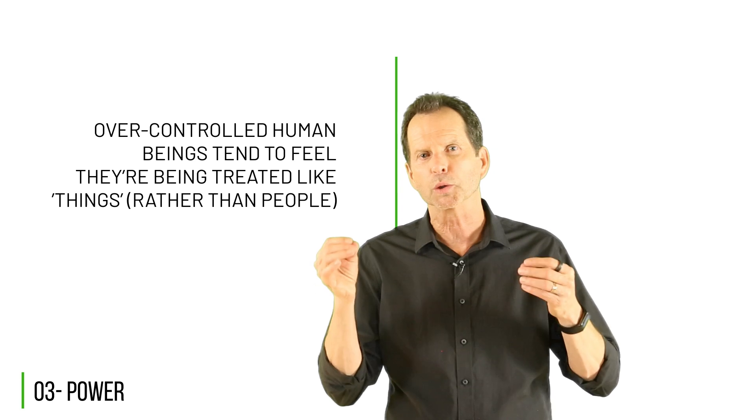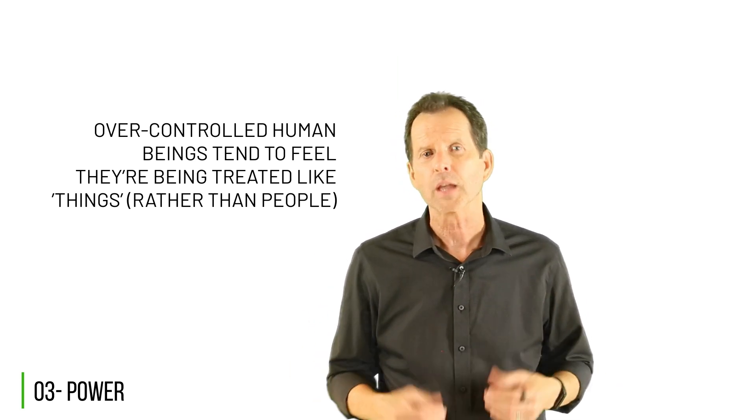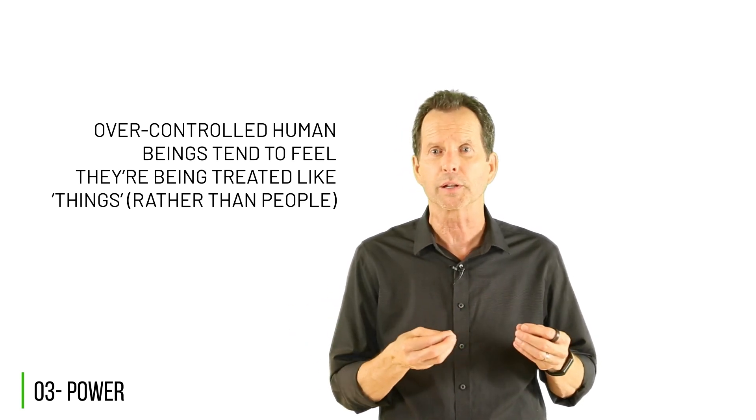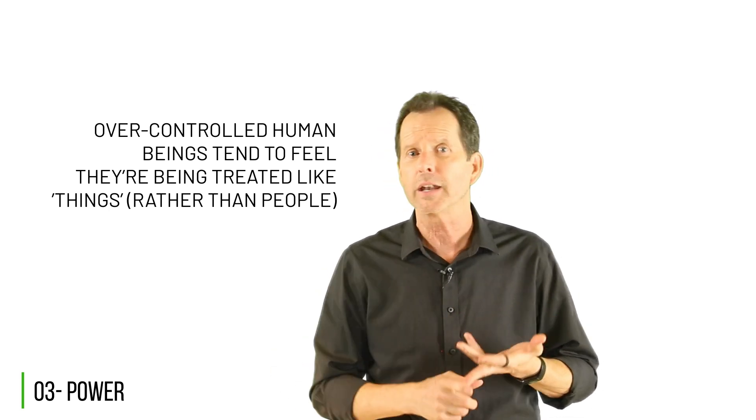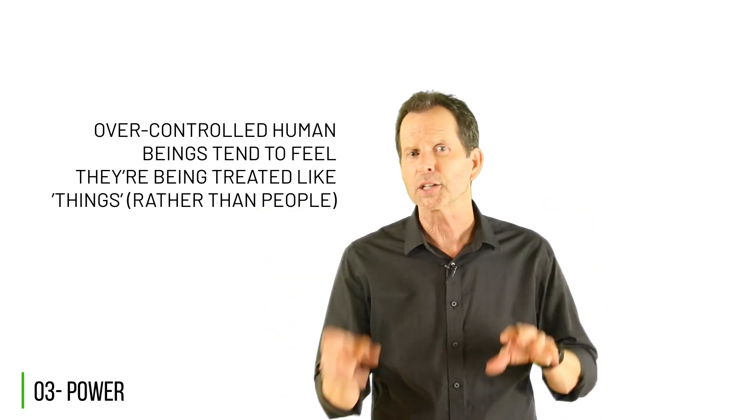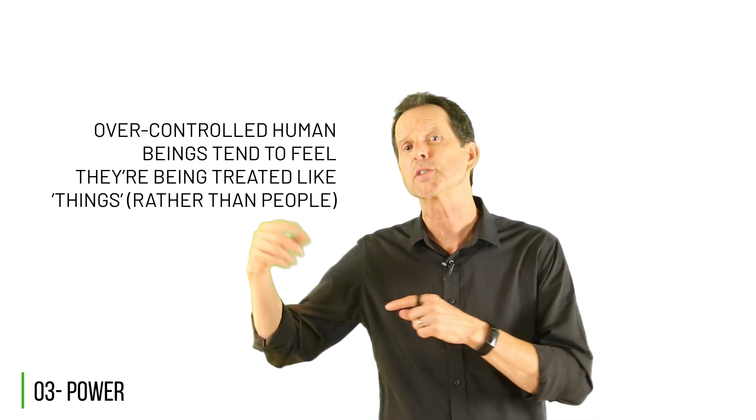Why would you expect your family members or your team members to behave any differently? Over-controlled human beings tend to feel they're being treated like things rather than people. Such feelings contribute to many of the challenges and issues currently plaguing organizations, including lack of engagement, lack of accountability and ownership, and the modern malady of quiet quitting. Beyond this, when people continue to feel pushed and shoved through over-control, their self-control gets tested and often diminishes, which can lead to an eruption of emotion and poor choices. So now, let's talk about self-control.